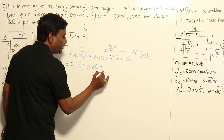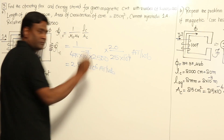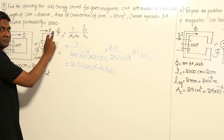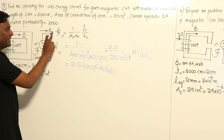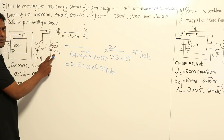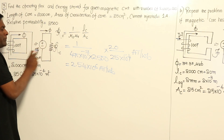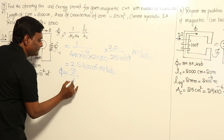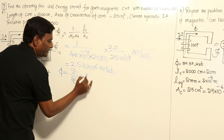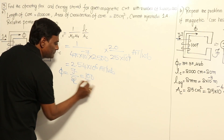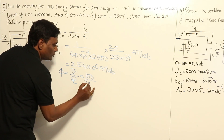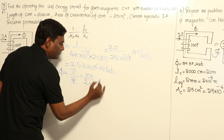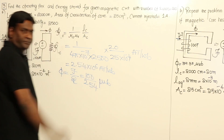Now let us calculate flux. Analogous to electrical circuits where current = voltage / resistance, flux = MMF / reluctance. So flux = 100 / (2.54 × 10⁶), which gives us a result in micro webers.